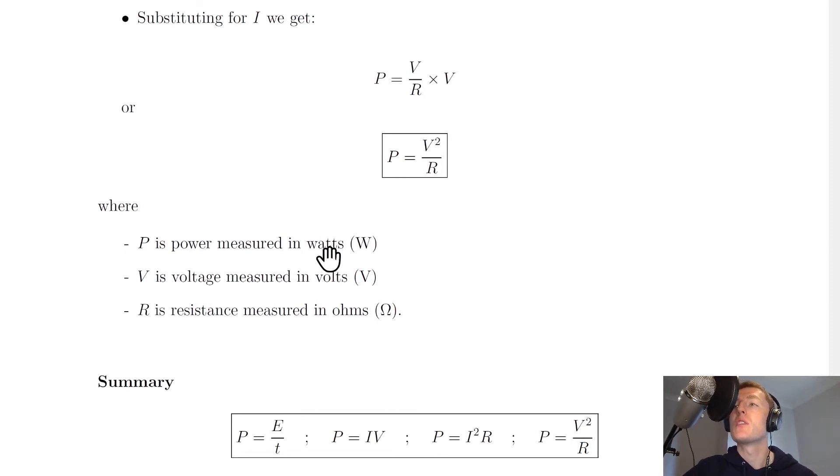where P is power measured in watts, V is voltage measured in volts, and R is resistance measured in Ohms. If you're given a voltage and a resistance in a question, then you can calculate power using this equation.